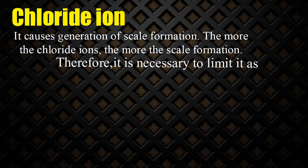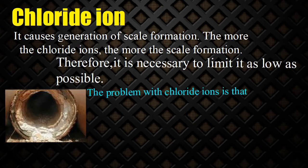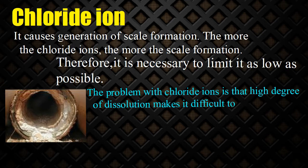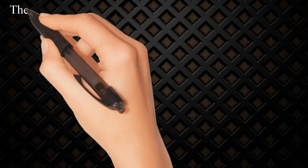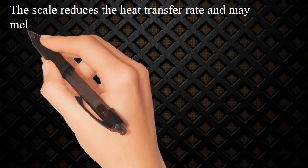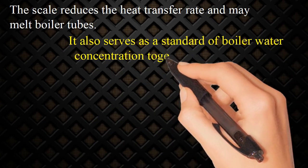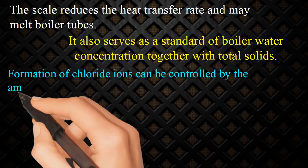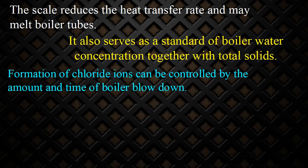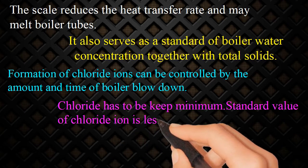The chloride ion level is necessary to limit as low as possible. The problem with chloride ions is that their high degree of dissolution makes them difficult to remove. Scale reduces the heat transfer rate and may melt boiler tubes. Formation of chloride ions can be controlled by the amount and timing of boiler blowdown. The standard value of chloride ion is less than 300 mg Cl per liter.